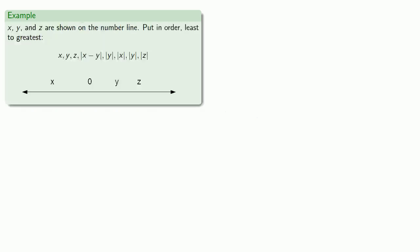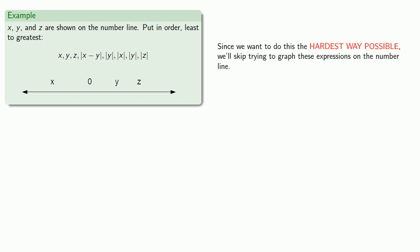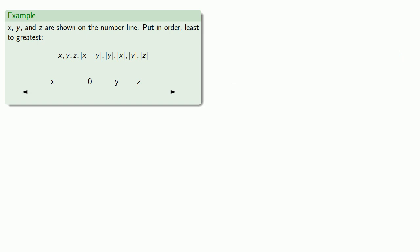What if we have x, y, and z shown on the number line, and we want to put a bunch of expressions in order from least to greatest? Since we want to do this the easiest way possible, let's graph these expressions on the number line.